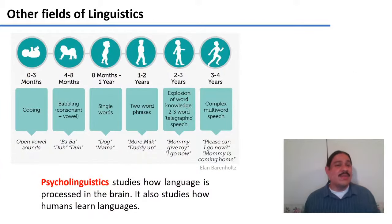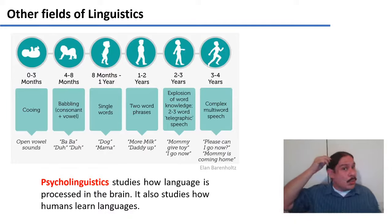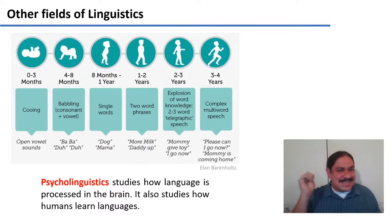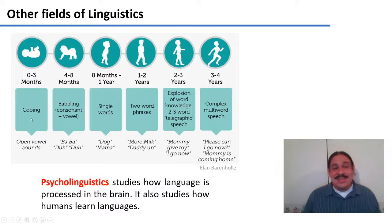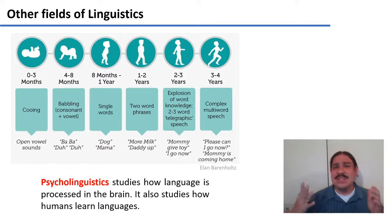Linguistics also studies other phenomena. Psycholinguistics studies how language is processed in the brain — for example, what regions of your brain light up in a magnetic scan, or how blood flow indicates energy expenditure when you think of certain words or sentences. It also studies how humans learn languages. Babies go from babbling sounds to single words to double words to suddenly exploding in vocabulary. If they can speak English in three to four years, they must be learning about 50 words a day, which is incredibly fast.